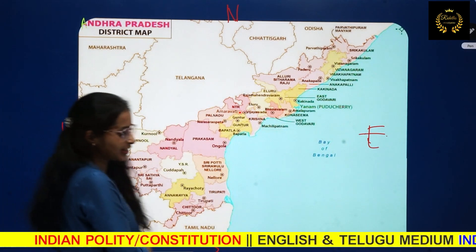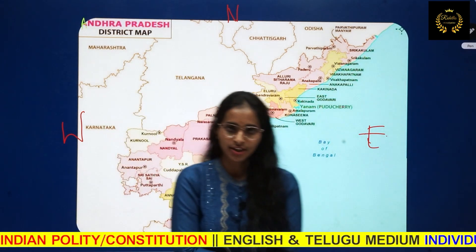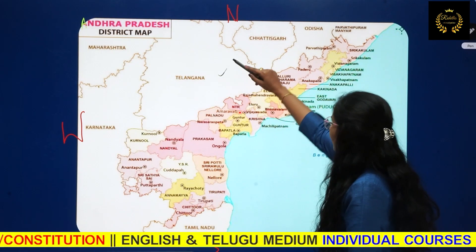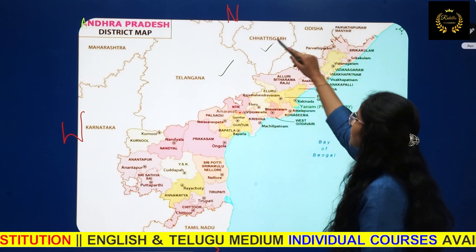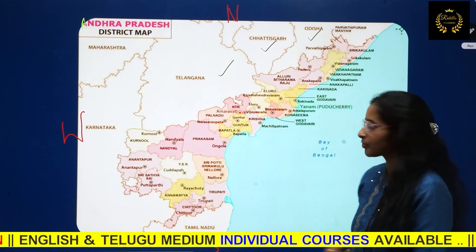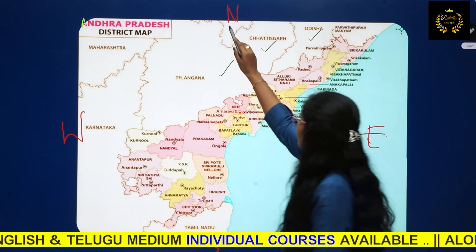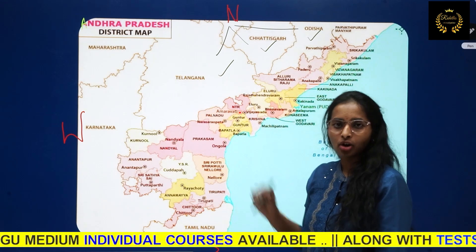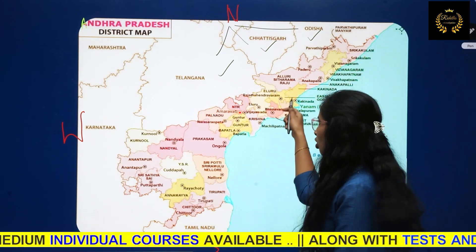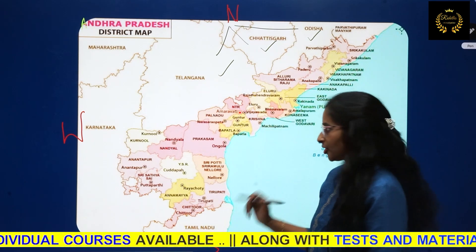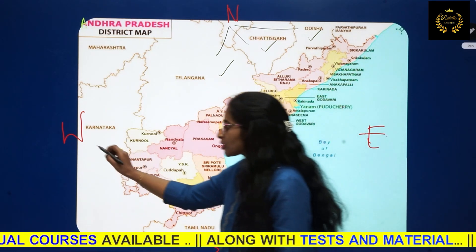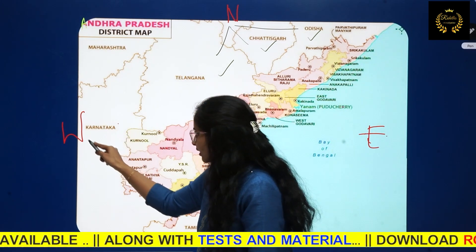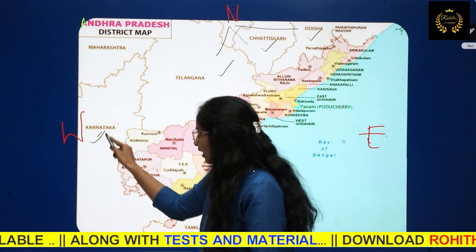In the north, Andhra Pradesh shares borders with Telangana, Chhattisgarh, and Odisha. In the western part, Karnataka shares the border with Andhra Pradesh.